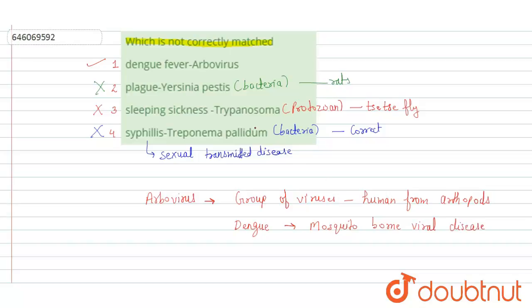In the other options, the specific pathogen is given directly — for example, which particular bacteria cause plague. But in the case of dengue fever, the option gives the group of viruses transmitted from arthropods. Dengue is actually caused by one specific arbovirus, the flavivirus, belonging to the Flaviviridae family, with single-stranded RNA as its genetic material. So the correct answer should be dengue virus, not arbovirus — making this an incorrect match.